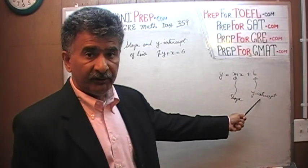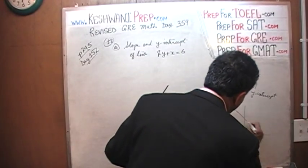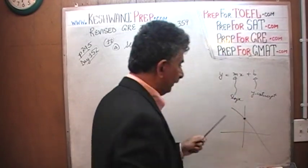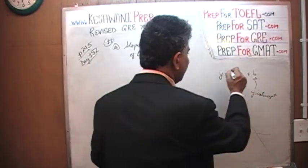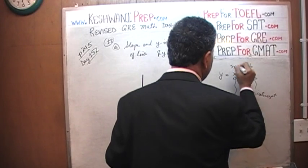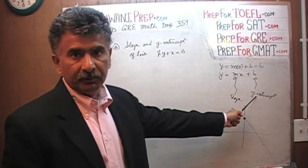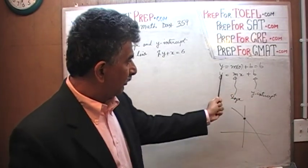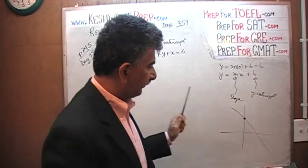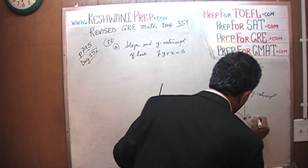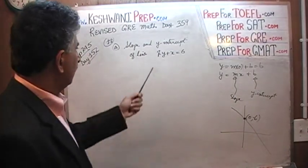The Y-intercept is so called because that's where the line cuts the Y-axis. At the point where the line cuts the Y-axis, the X-coordinate is zero. So if you substitute zero for X, you get M times zero plus B, which means Y equals B. That's your Y-intercept — when X equals zero, Y equals B. The coordinates of that point are zero and B.